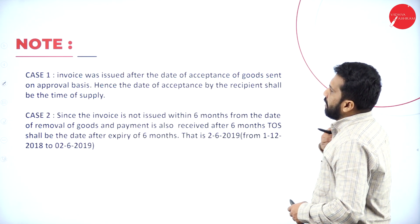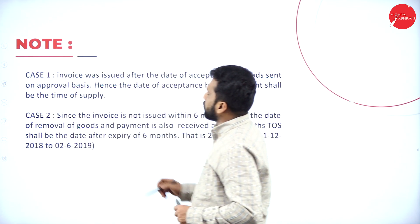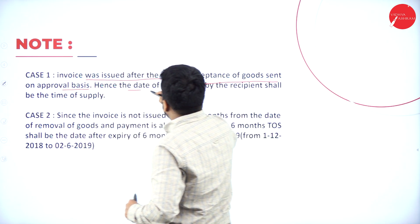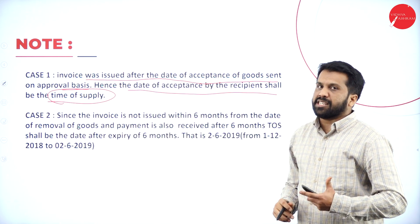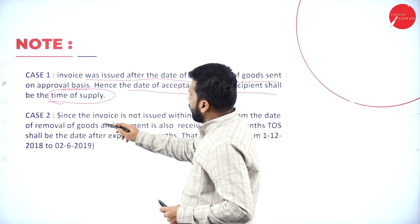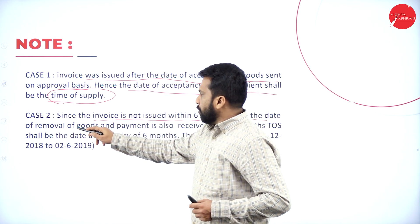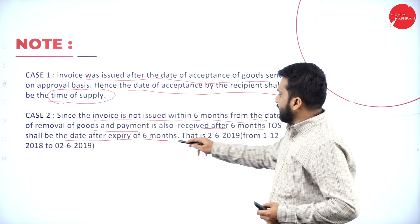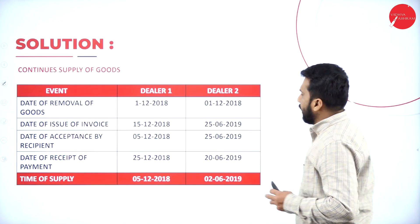For Dealer 1, Case 1: the invoice was issued after the date of acceptance of goods sent on approval basis. Hence, the date of acceptance by the recipient shall be the time of supply — that is 5th December. For Dealer 2, Case 2: the invoice is not issued within 6 months from the date of removal of goods, and payment is also received after 6 months. Therefore, the time of supply shall be the date of expiry of 6 months, that is 2-6-2019.